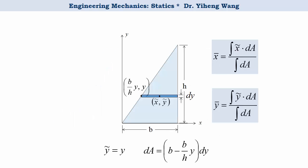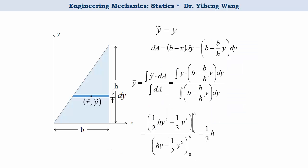To find y bar we do the same thing, but use a horizontal strip instead. And again we get the same result, y bar is one-third h. So it is up to you to decide what is the best method to use. As you can see, choosing the differential element cleverly can greatly simplify your calculation.